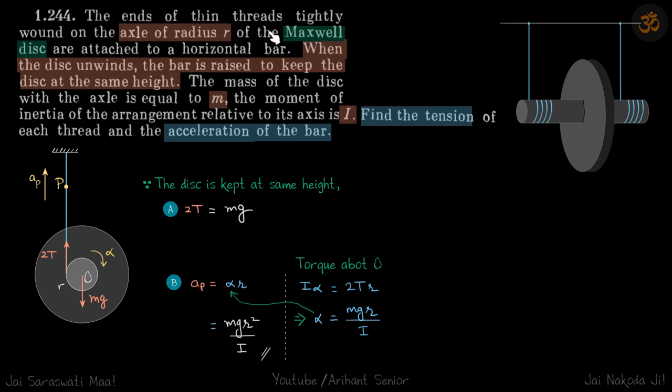We have a Maxwell disc and the thread is wound on an axle of radius r, so this radius is smaller.